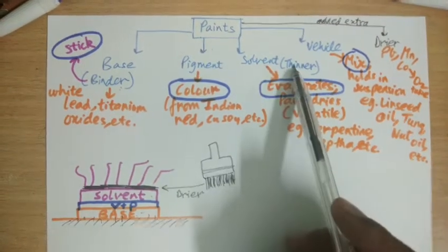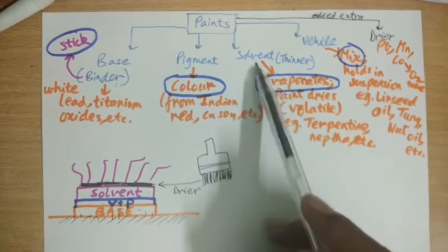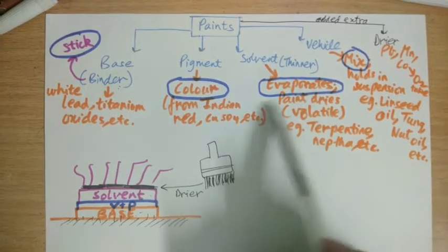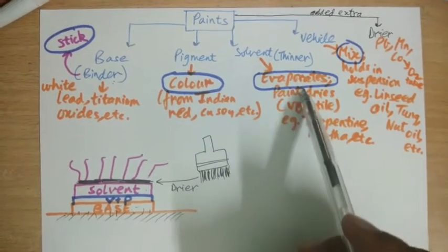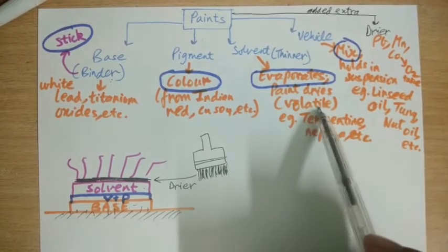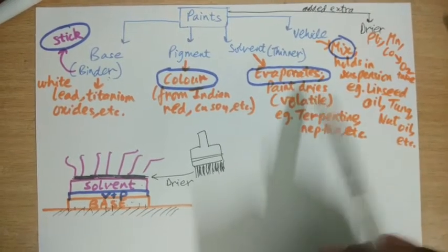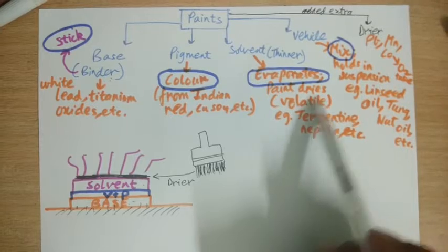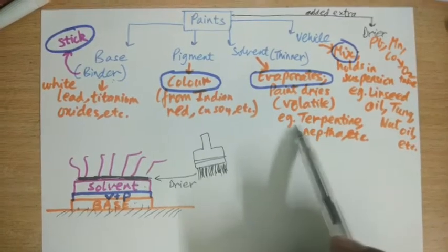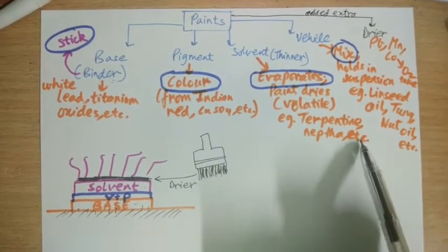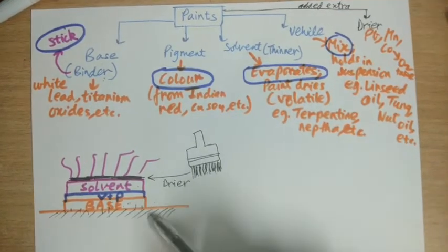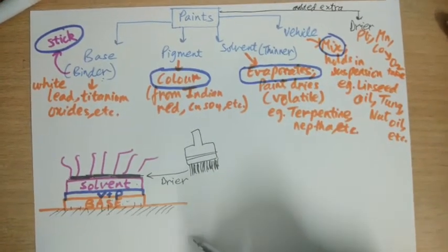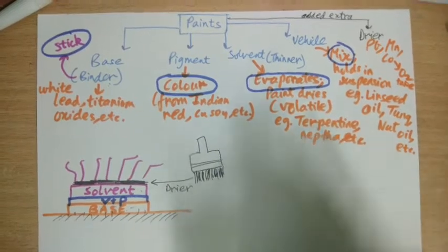Next we have solvent, also known as thinner. So what does the solvent do? It evaporates. It particularly mixes the paint uniformly and while applying it evaporates. It's a volatile material. Volatile means that it has very low boiling point. Generally examples are turpentine, naphtha, etc. Solvent evaporates, paint gets dried up on the surface where we want to paint, and hence paint is applied.